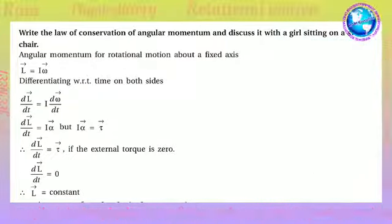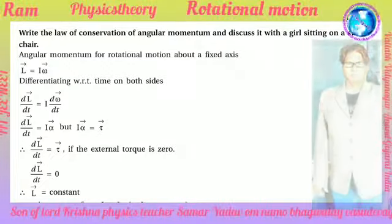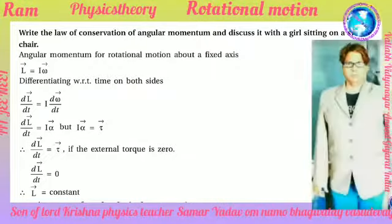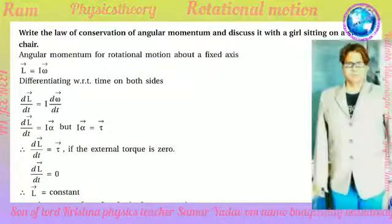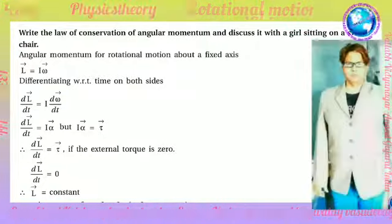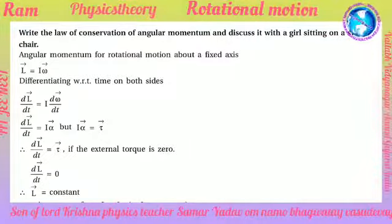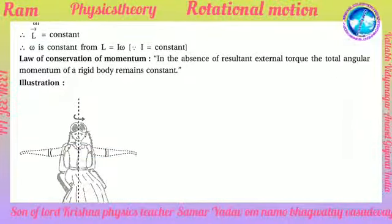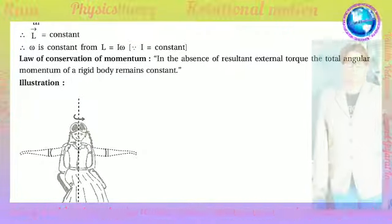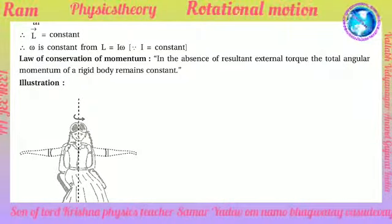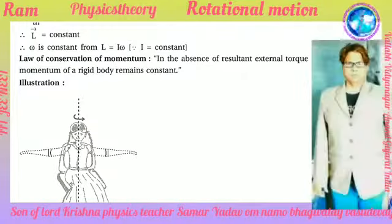Law of conservation of angular momentum. Angular momentum of rotational motion about a fixed axis is L = I*omega. Differentiating both sides with respect to time: dL/dt = I*(d_omega/dt) = I*alpha = tau. If external torque is zero, then dL/dt = 0, so L = constant, meaning I*omega = constant.